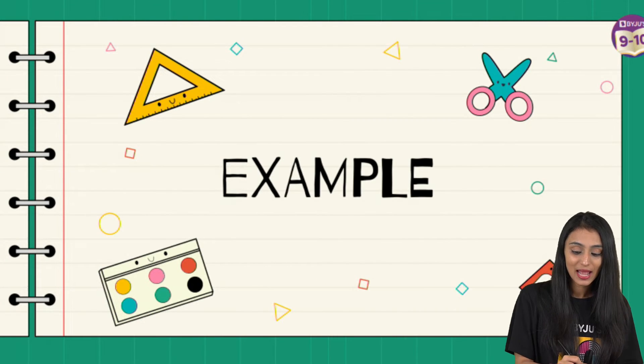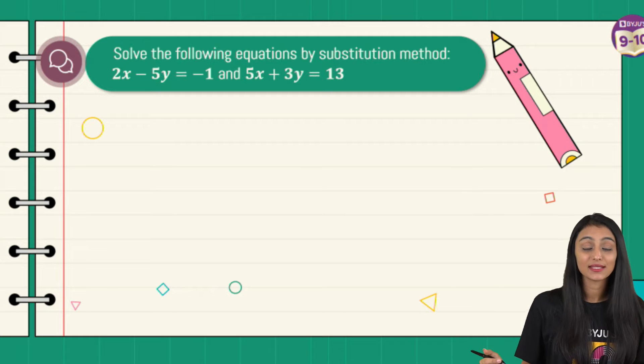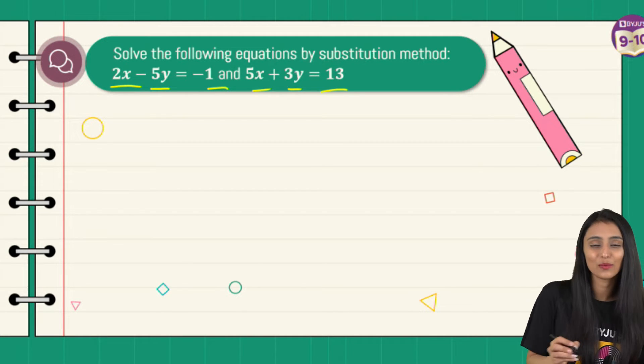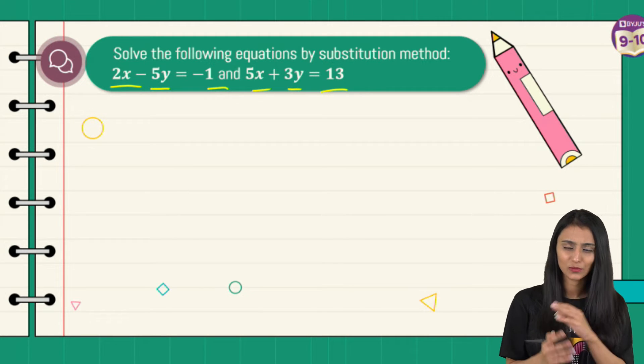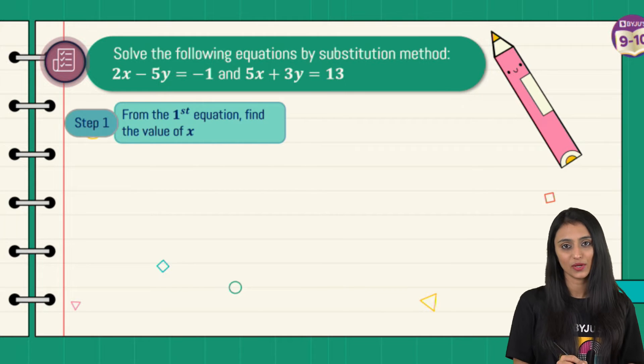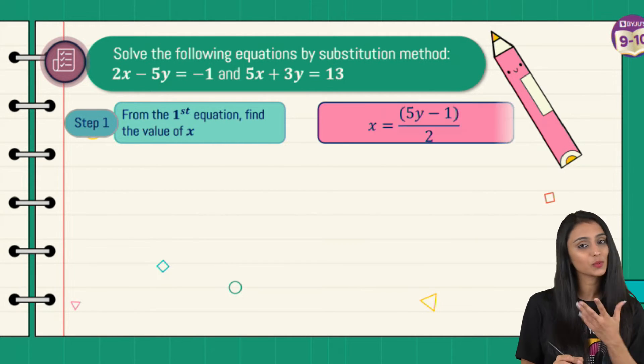Now let's take another example to understand this. Solve the following equations by substitution method: 2x minus 5y equals minus 1, and 5x plus 3y equals 13. This is a little more complicated than the previous one.